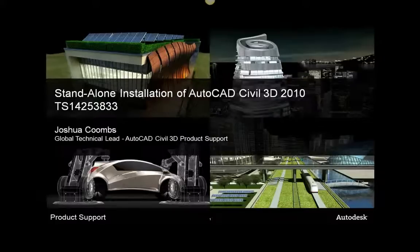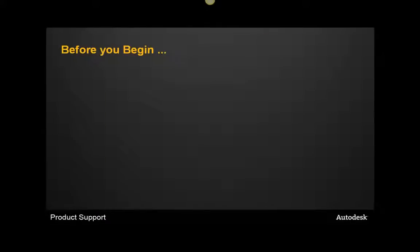Before we begin with the installation steps, there are a few things you will want to review first. You will want to be familiar with the installation documents provided with your product. You can find them either on the product media itself or from the installation wizard. You can also find these documents online on autodesk.com.